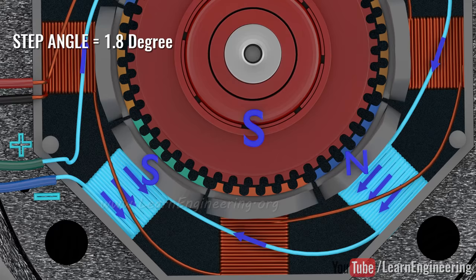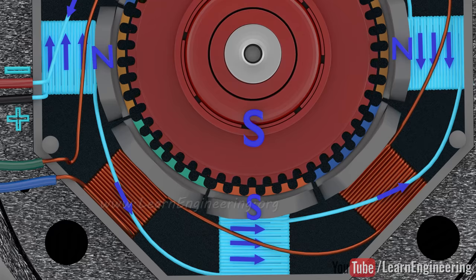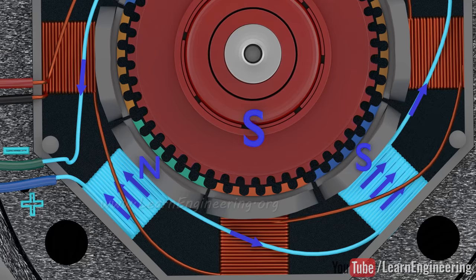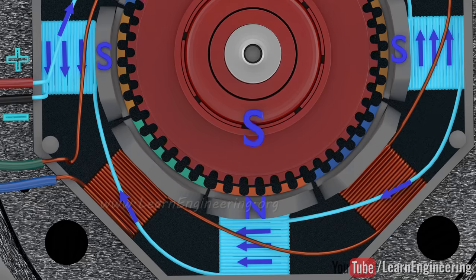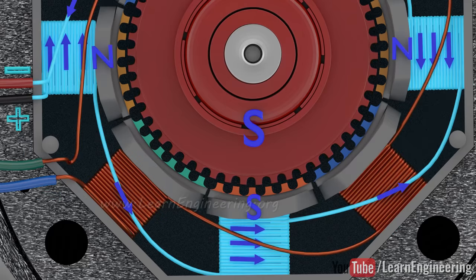Next, set A is energized with the opposite polarity. Again, the rotor moves by 1.8 degrees. This process is repeated, and a highly accurate motion is achieved by the motor. The step angle resolution can be further improved by half-stepping.